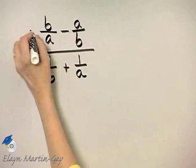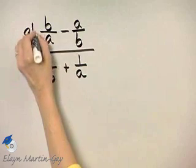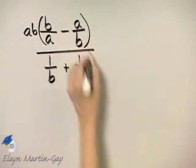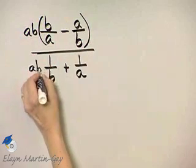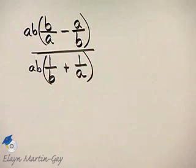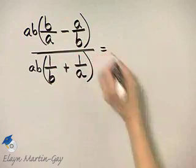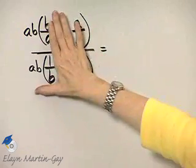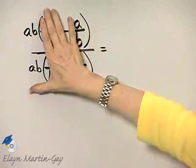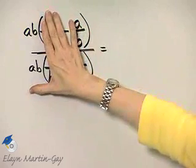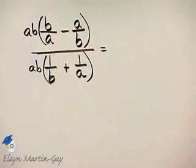So I will multiply the numerator of the complex fraction by AB and the denominator of this complex fraction by AB. And notice why we can do that, because what is AB over AB? It's the same as one, so what I'm doing is the same as multiplying by one.